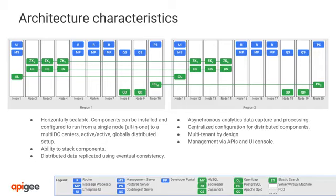Nodes 5, 6, 7, 15, 16, and 17 correspond to the gateway. These nodes contain routers and message processors. A typical Apigee topology places both routers and message processors on the same server, though separation is possible if network zone requirements call for it. The number of routers and message processors is driven by requirements and capacity planning. The minimum requirement is one of each, but most production installations will have two or more per region. Routers and message processors are stateless and horizontally scalable — they can be added and removed quickly if necessary.